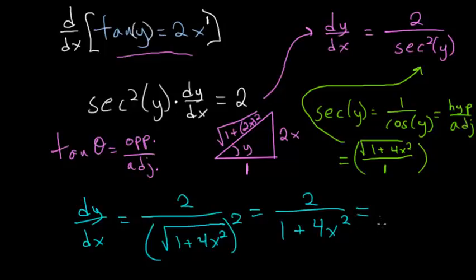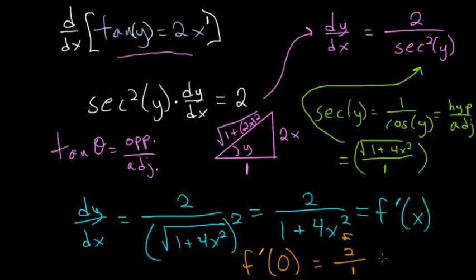Remember, this is just equal to the derivative of our function f of x. And the original question asked us to evaluate the derivative when x is equal to 0. So if we just plug in 0 here for x, we'll have 2 divided by 1 plus 0. So it would be 2 over 1, which is 2. So 2 is our final answer.